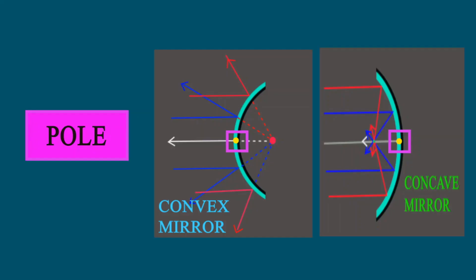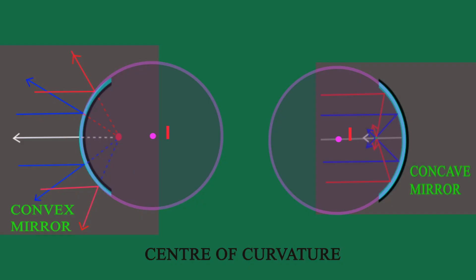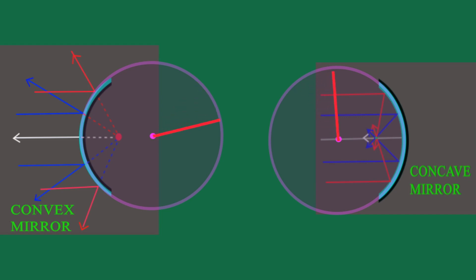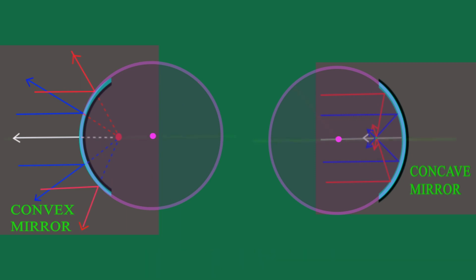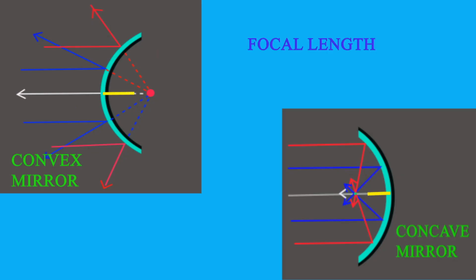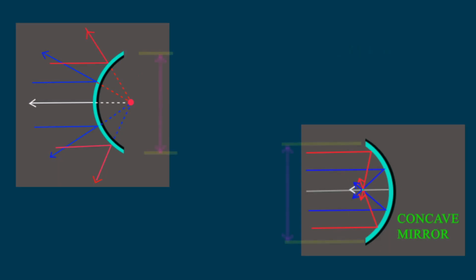So we have learned the basic terminologies for spherical mirrors. Quick recap: Pole means the geometrical center of convex and concave mirrors. Center of curvature means the center of the sphere. Radius of curvature is the radius of that sphere. The principal axis is the main axis going through the pole and focus. Focal length is the distance between pole and focus for both convex and concave mirrors. Aperture is the height of the convex and concave mirror.